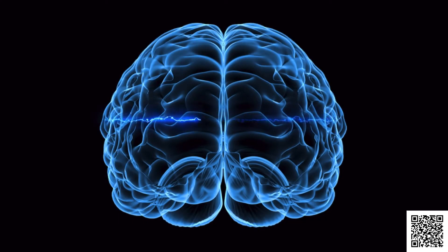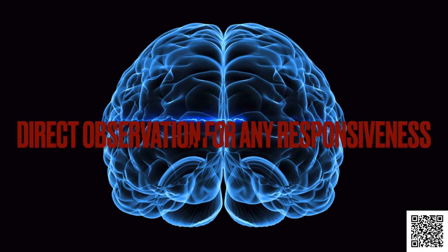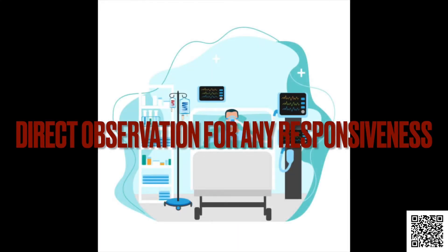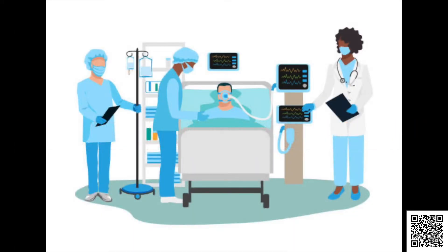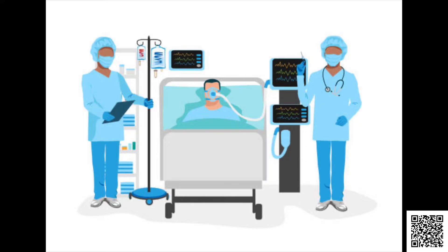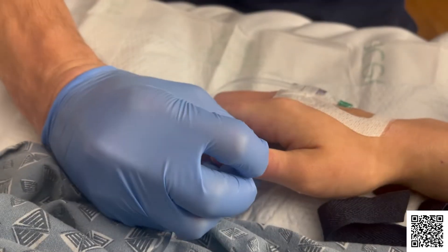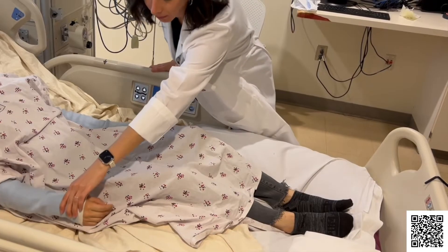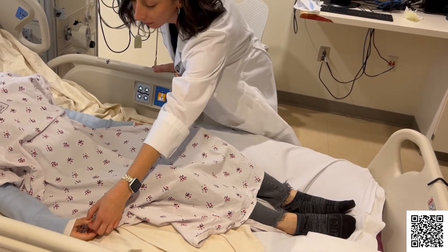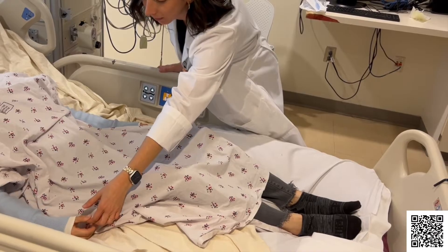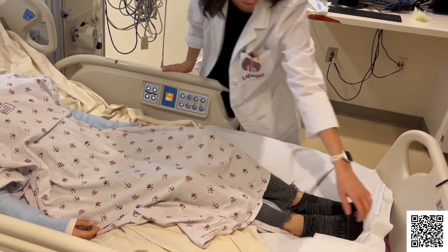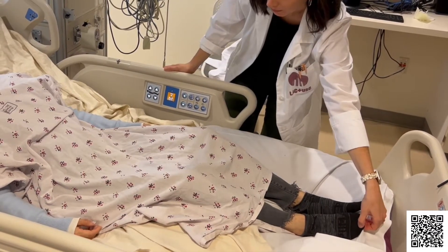The first step is direct observation and evaluation for any responsiveness. Observe the patient for an ample amount of time to confirm no spontaneous movements, responses, or breathing efforts. To evaluate for responsiveness, pressure or pinch is applied to the forehead, chest bone, and extremities to see if there's any movement in response. Occasionally there may be movements even after brain death, which are spinal reflexes similar to when the doctor taps your knee.